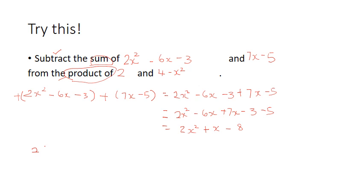Okay, now, next portion. We need to find the product. So, 2 times 4 minus x squared. What do we get? 2 times this whole expression. So, it's twice of 4 minus twice of x squared. Twice of 4 will give you 8. And 2 times minus x squared will give you minus 2x squared.